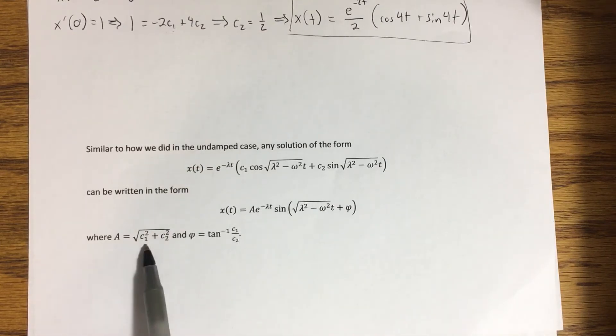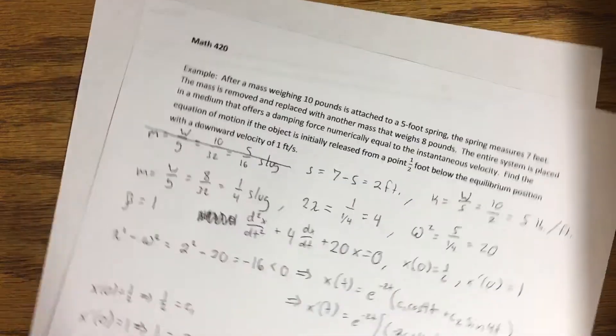The derivation that we did before would give us the same relationships between A, phi, and the two parameters C1 and C2. So we'll make use of those as well.